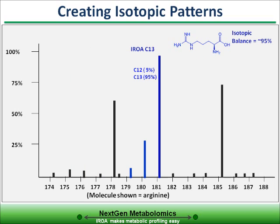Furthermore, if the C13 level is increased to 95% C13, the peak arrangement is now dramatically changed, and the base peak now shows at 181 — that is entirely C13 — and has not an M+1, but rather an M-1, at 180.